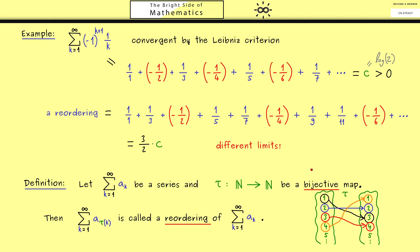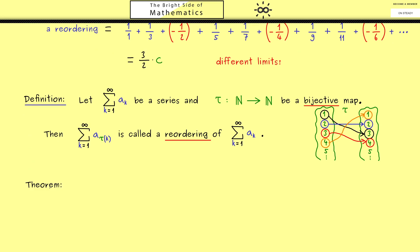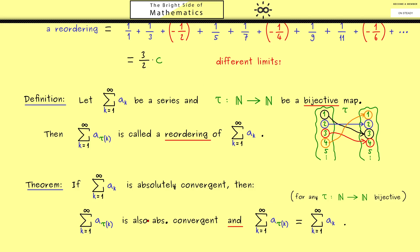Having this, let's formulate the theorem. It's about absolutely convergent series. If we have such a series, then any reordering is also absolutely convergent. More importantly, the limits are the same. Such a strange thing as before can't happen here. This nice result holds for any reordering.